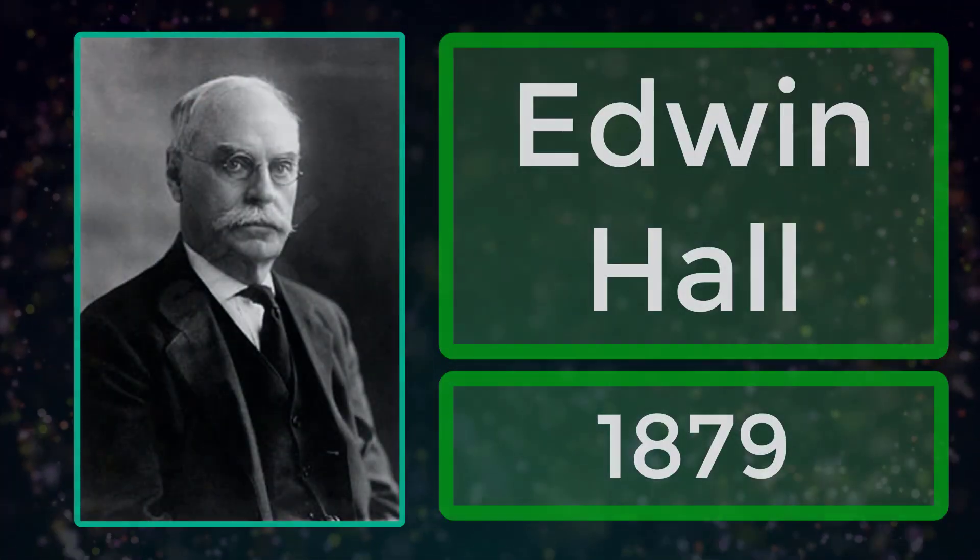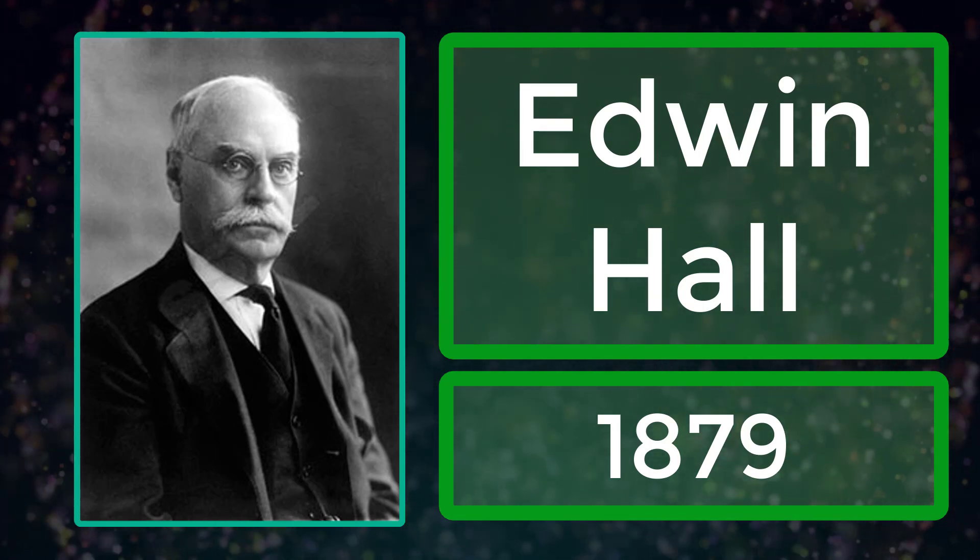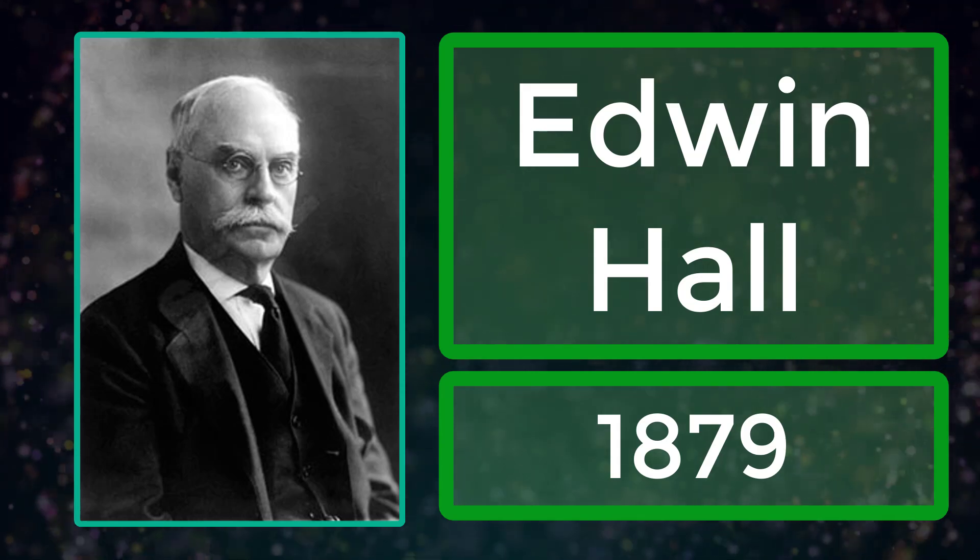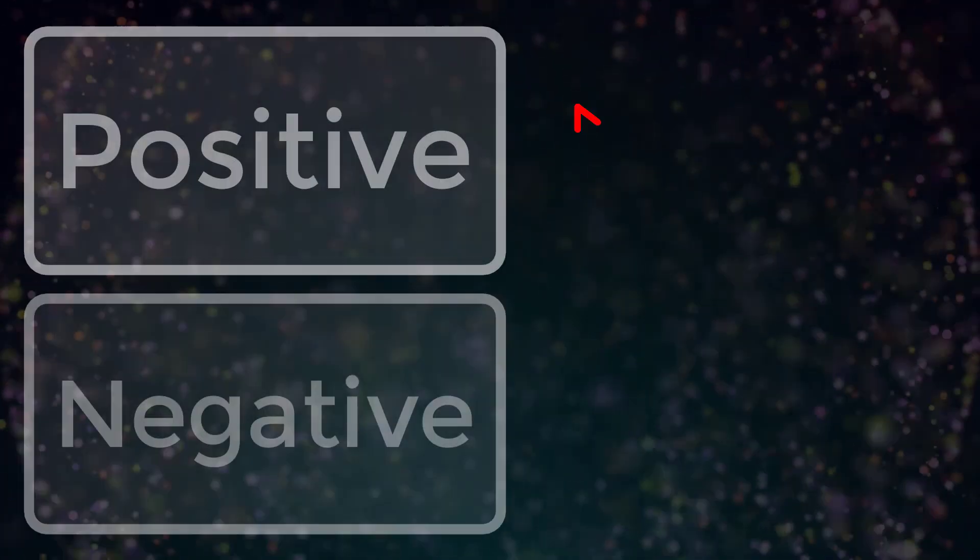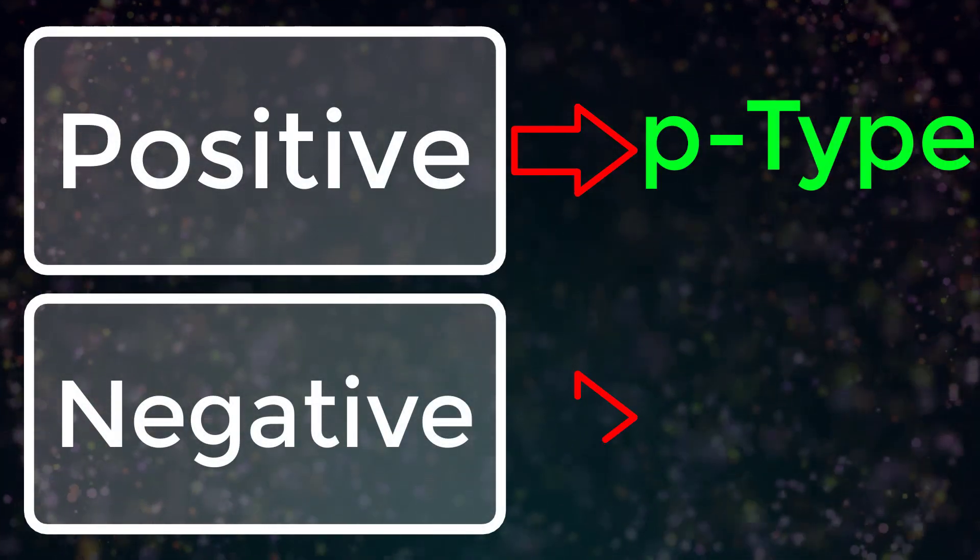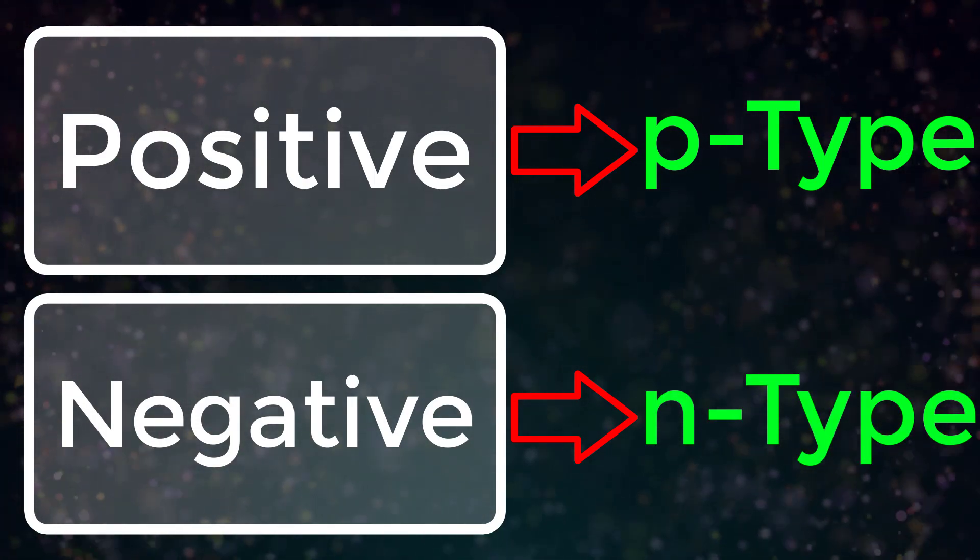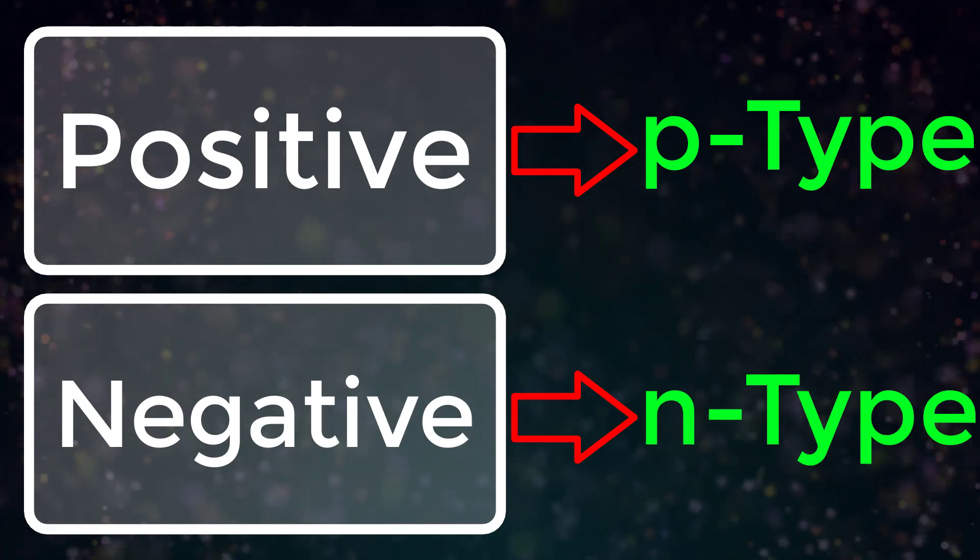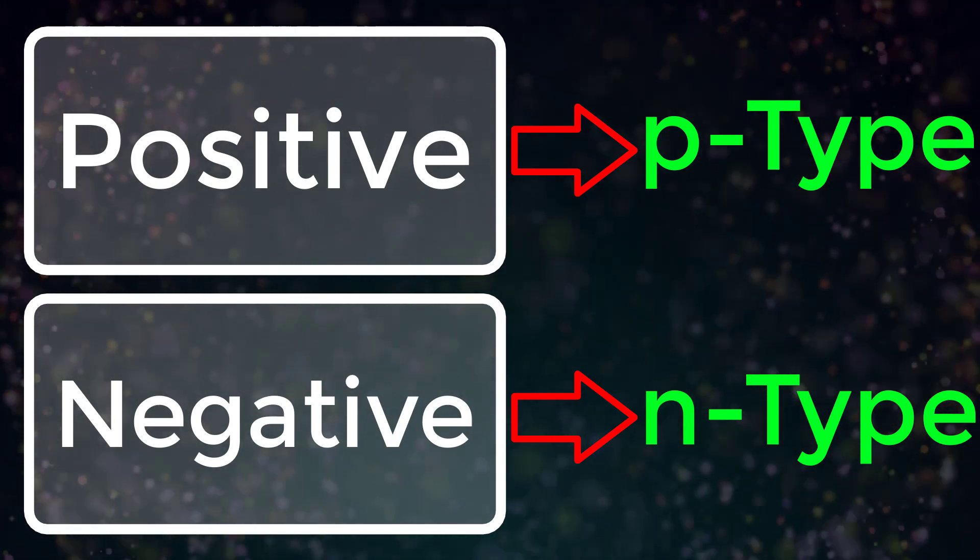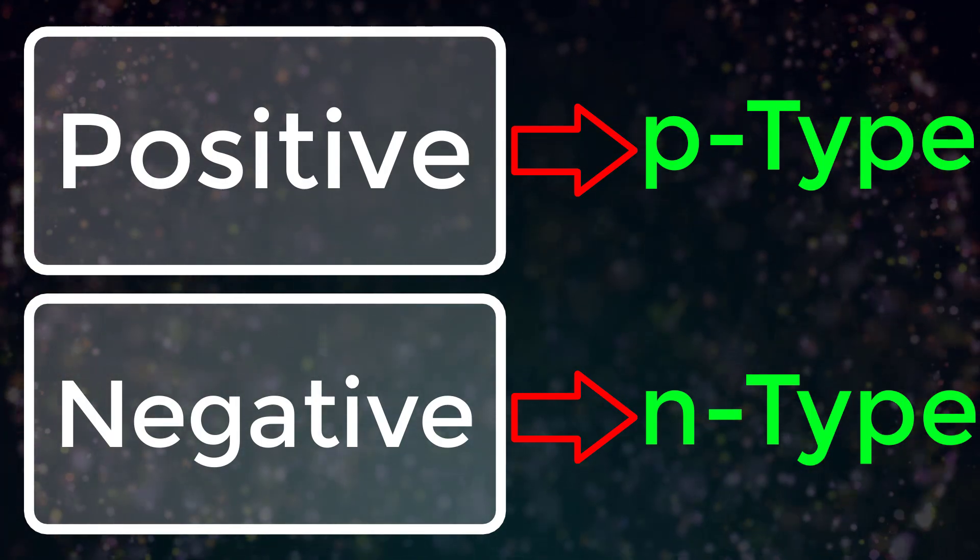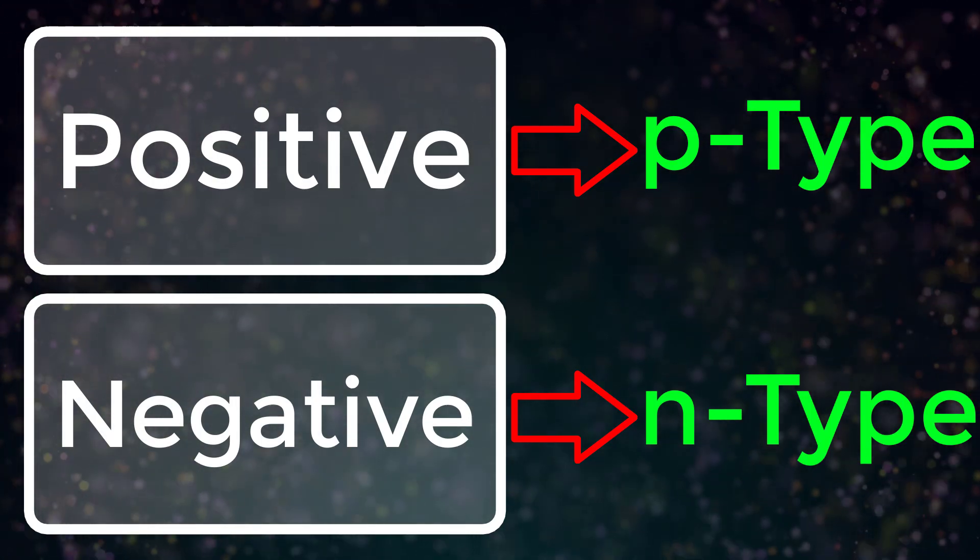Hall effect was named after American physicist Edwin Hall, who discovered the phenomenon in 1879. Hall effect helps to determine the type of material. We can easily identify whether a semiconductor is p-type or n-type by using this effect. If the voltage produced is positive, then the semiconductor is said to be p-type, and if the voltage produced is negative, then it is n-type.